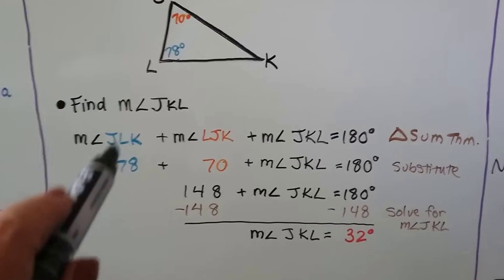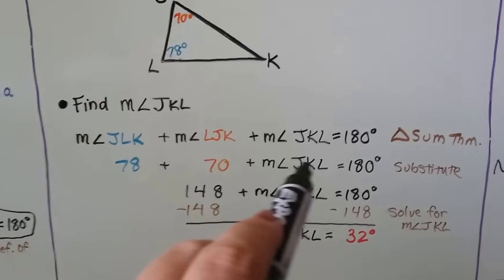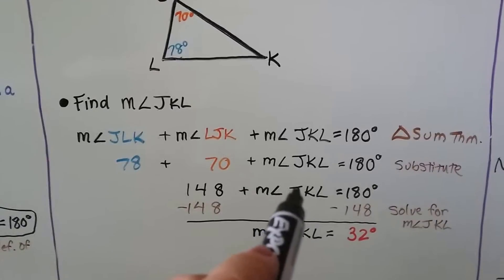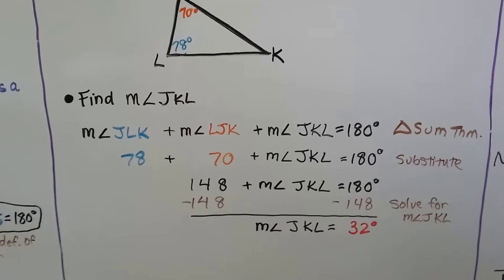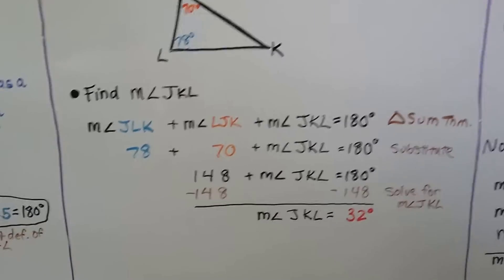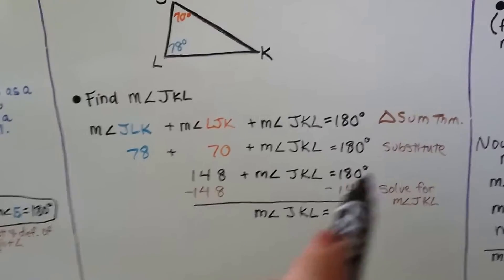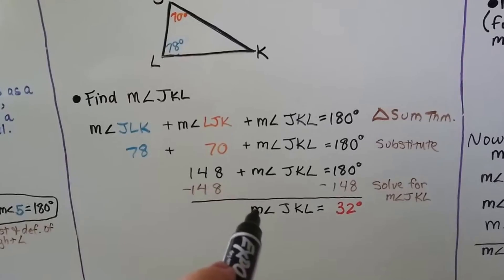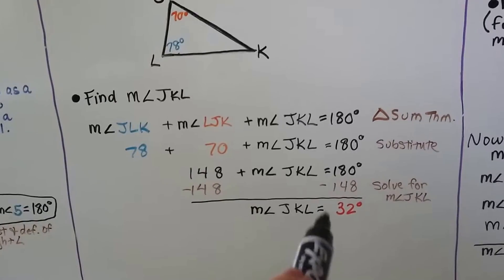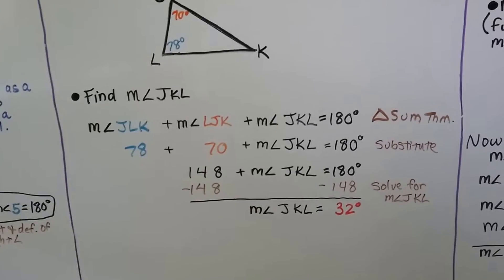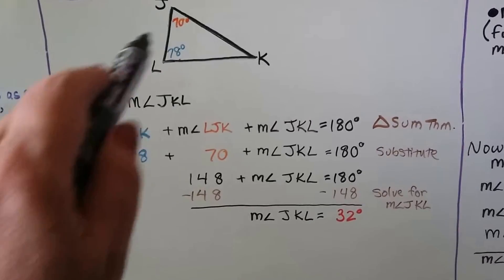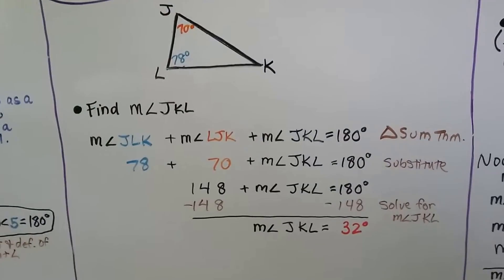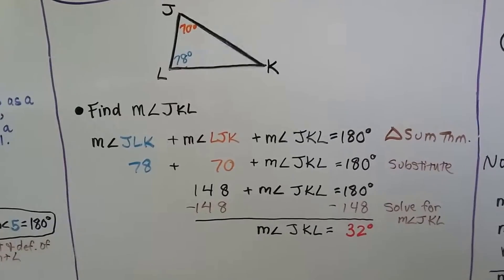We substitute in 78 and 70, add them together and get 148. That plus the missing angle measure should equal 180 degrees. We subtract 148 from each side of the equal sign, creating a zero pair, and we're left with the measure of angle JKL equal to 32 degrees. If we have two measures, we can add them and subtract from 180 to find the missing one.